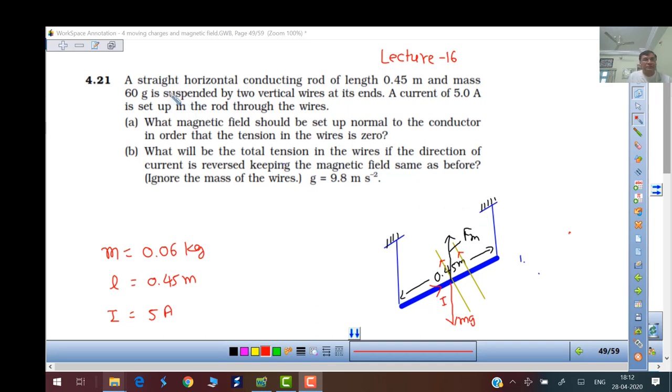So friends, we have exercise 4.21. Please write down each and every step. A straight horizontal conducting rod of 45 meters and given mass is suspended with two vertical wires. Current is 5 amperes flowing through it.